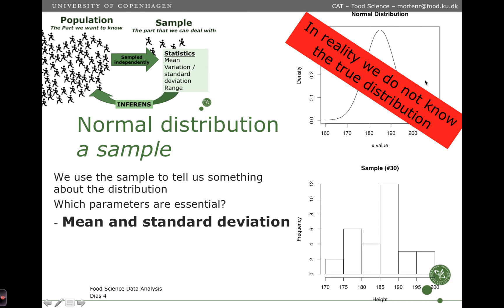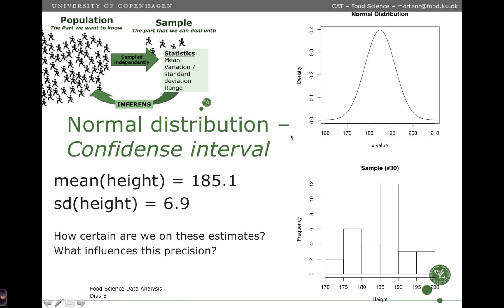In reality, we do not know the true distribution, but we have a sample of — in this case — 30 samples which are drawn from the population. We use these to calculate the parameters for the normal distribution. Naturally, we would say the mean is the average of the sample, so the 30 measurements here have a mean height of 185.1. And we use the standard deviation calculated on these 30 samples to set the standard deviation of the normal distribution.